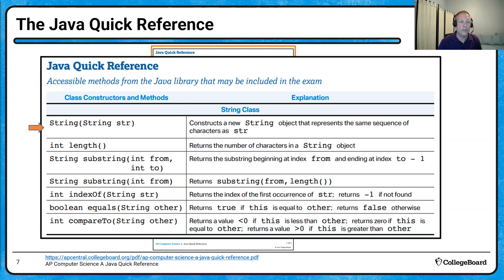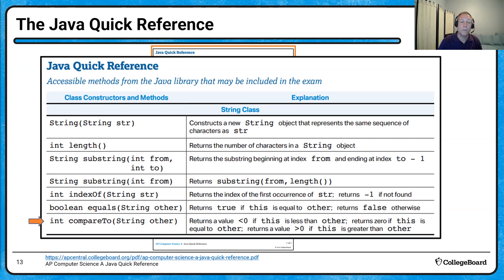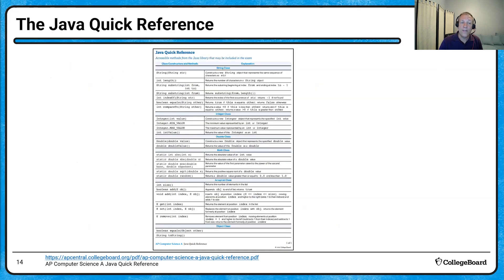The String class section covers constructors and methods. There's the String constructor and methods like length, substring, and indexOf. Substring with two parameters goes from the starting index up to but not including the second index. With one parameter, it goes from that index all the way to the end. indexOf finds the first occurrence of a string and returns negative one if not found. There's also dot-equals to compare strings and compareTo, which returns positive, negative, or zero.